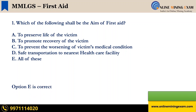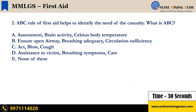Time up. The correct answer is E — all of these. Next question: the ABC rule of first aid helps to identify the need of the casualty. What is ABC? A — assessment, brain activity, Celsius body temperature; B — ensure open airway, breathing adequacy, circulation sufficiency; C — act, blow, cuff; D — assistance to victim, breathing symptoms, care; E — none of these. Your time starts now.